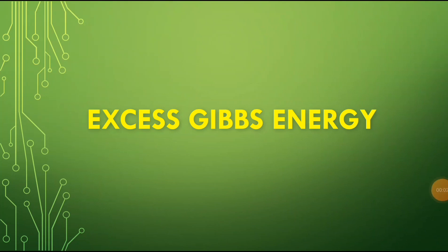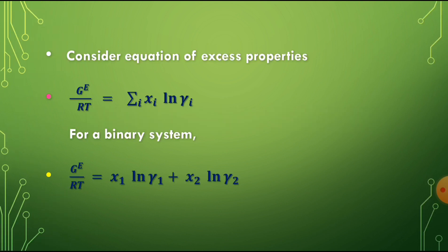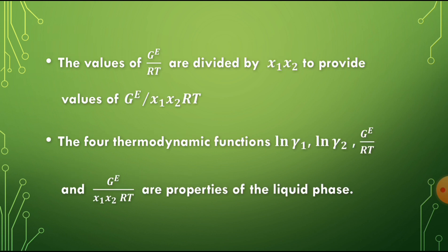Today the topic is excess Gibbs energy. First we consider the equation of excess properties: G_E by RT is equal to the sum over i of x_i ln gamma_i. For a binary system, G_E by RT is equal to x1 ln gamma1 plus x2 ln gamma2. The values of G_E by RT are divided by x1 x2 to provide values of G_E by x1 x2 RT, where G_E is the excess Gibbs energy, x1 and x2 are compositions, R is the gas constant, and T is the temperature. The four thermodynamic functions — ln gamma1, ln gamma2, G_E by RT, and G_E by x1 x2 RT — are properties of the liquid phase, where gamma is the activity coefficient.